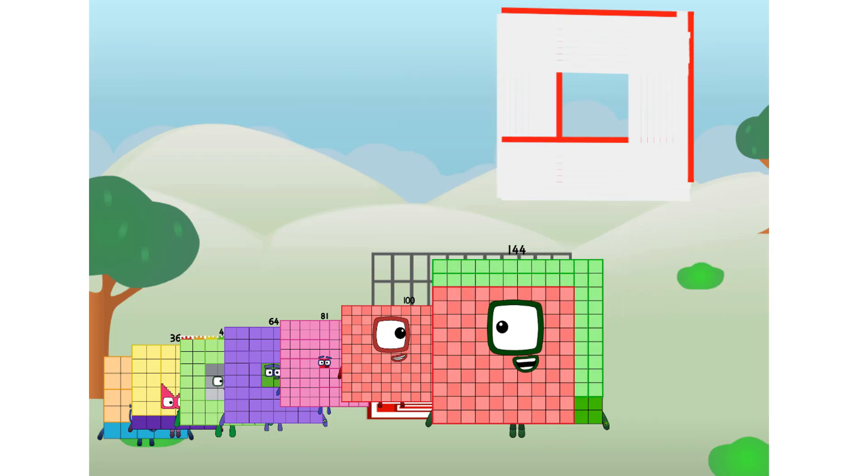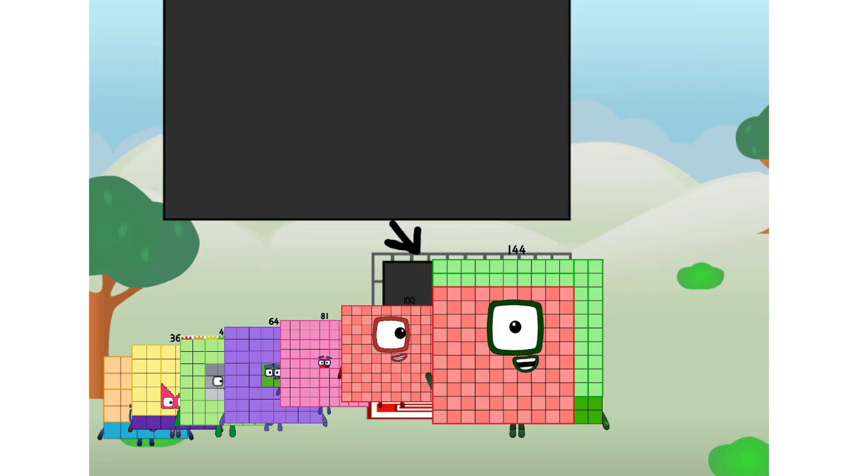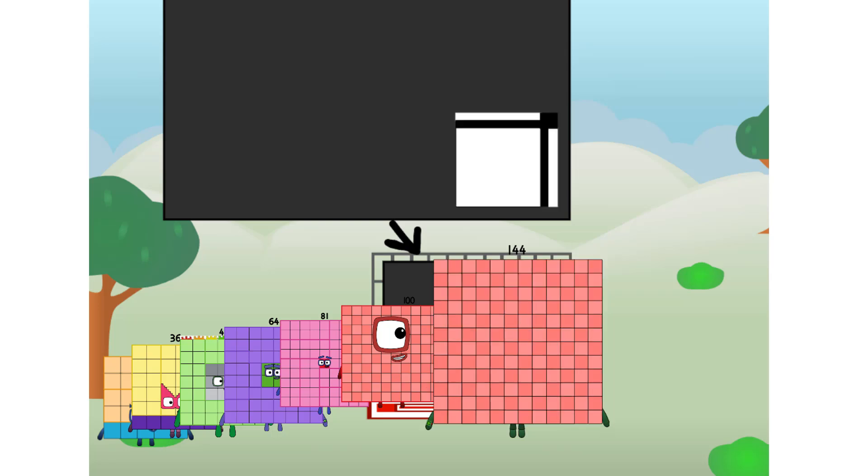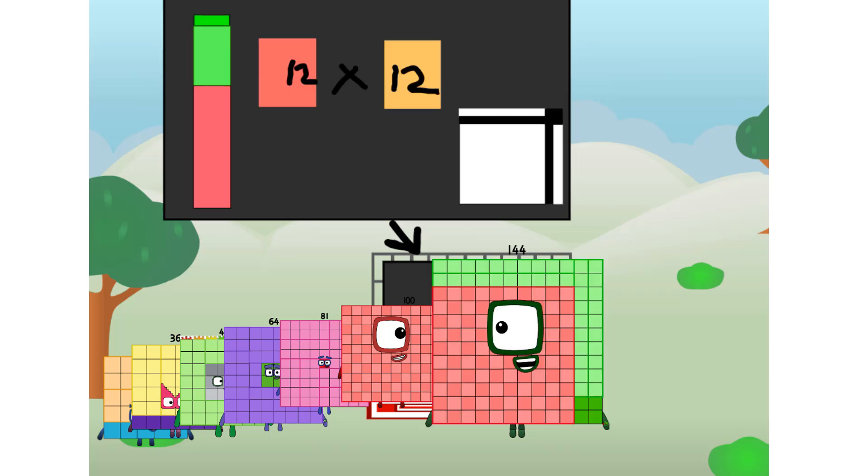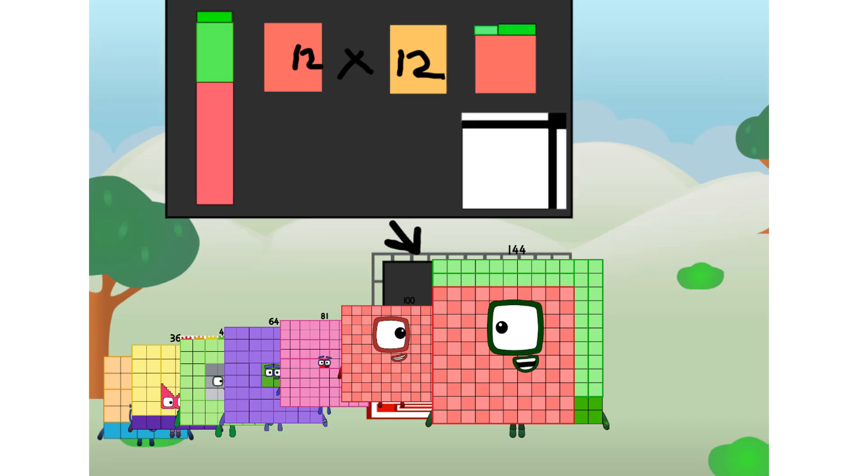There you are. This way. I've got so much to show you. I am 144, and I can be a strong square, a 12 chessboard, a super rectangle, 12 super rectangles, or even a super cuboid.